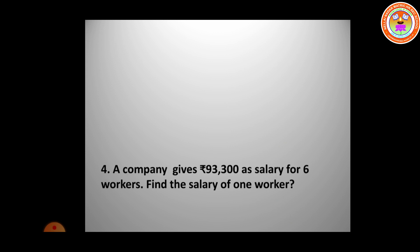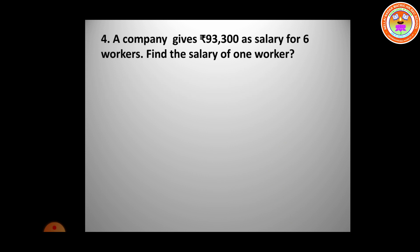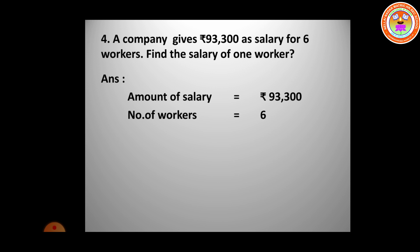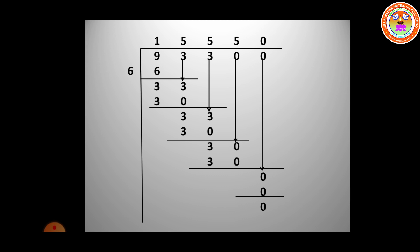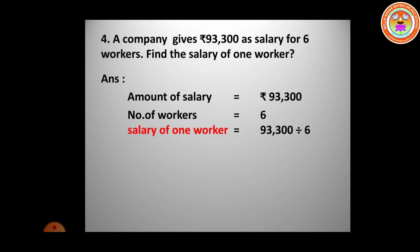A company gives ₹93,300 as salary for 6 workers. Find the salary of one worker. Total salary = ₹93,300, number of workers = 6. Dividing 93,300 by 6, we get 15,550 as the quotient. The salary of one worker is ₹15,550.